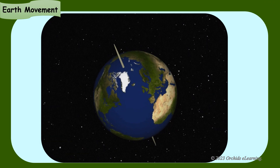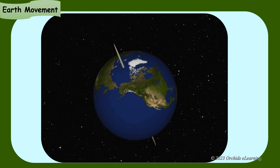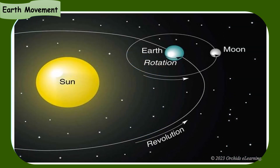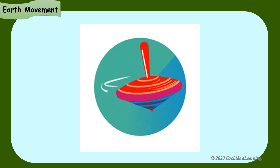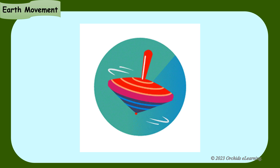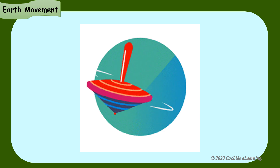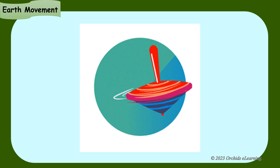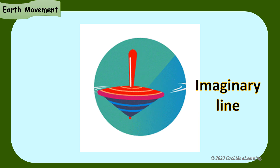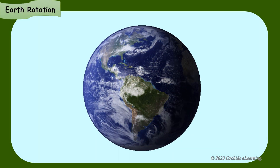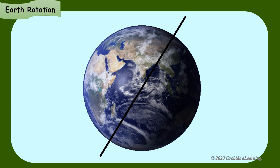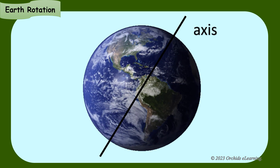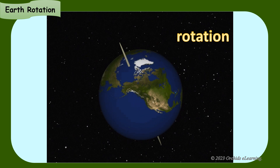Our Earth is moving all the time. It shows two kinds of movement: Rotation and Revolution. If we spin a top, it moves around and round while staying at the same place. The top is said to spin about a line passing through its center. We cannot see this line, so it is called an imaginary line. In the same way, our Earth also spins about an imaginary line that passes through its center. It is called the axis of the Earth. The spinning movement of the Earth about its axis is called rotation.